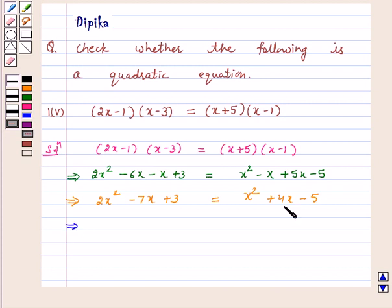Bring the terms from the right hand side to the left hand side. We get 2x square minus x square minus 7x minus 4x plus 3 plus 5 is equal to 0. This implies x square minus 11x plus 8 is equal to 0.